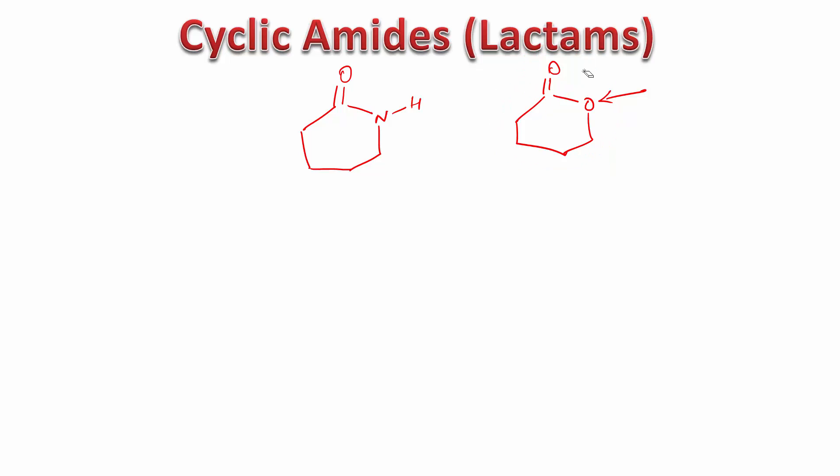We would number this as one, this is two, and we used to call it 2-oxacyclohexanone. Very similar is the way we name cyclic amides. Number this as one, number this as two, and instead of oxa we call it aza. It's 2-azacyclohexanone.